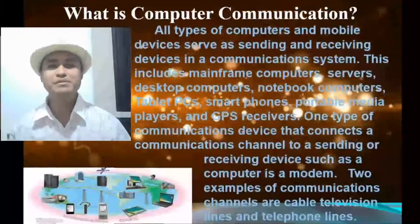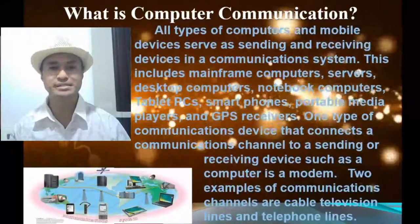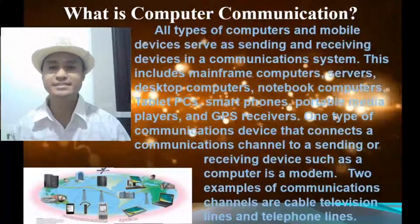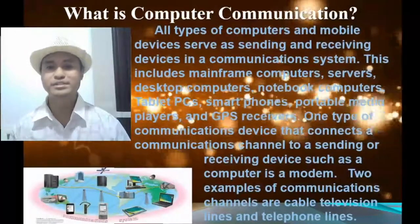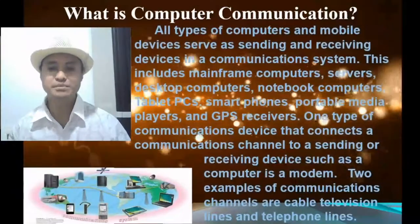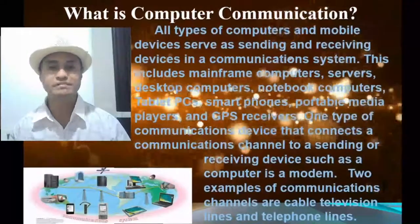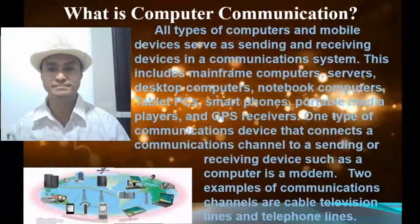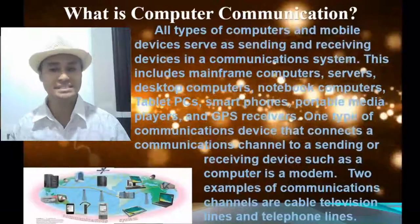A receiving device accepts the transmission of data, instructions, or information. All types of computers and mobile devices serve as sending and receiving devices, including mainframe computers, servers, desktop computers, notebook computers, tablet PCs, smartphones, portable media players, GPS receivers, and more. One type of communications device that connects a communications channel to a sending or receiving device is a modem. Two examples of communications channels are cable television lines and telephone lines.